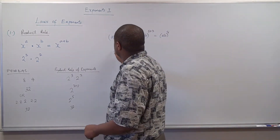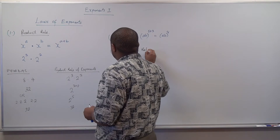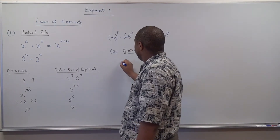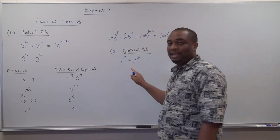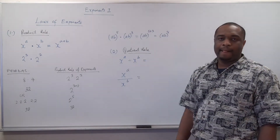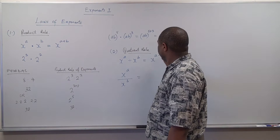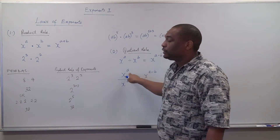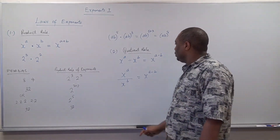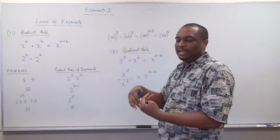The second rule is what we call the quotient rule. Here, if we have x raised to power a divided by x raised to power b — you can write it as a fraction, x raised to power a all over x raised to power b — because they have the same base, you bring it out as x raised to power a minus b. The top exponent minus the bottom exponent. So the exponent in the numerator has the denominator's exponent subtracted from it.